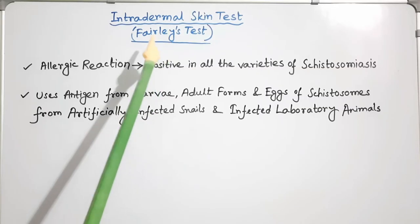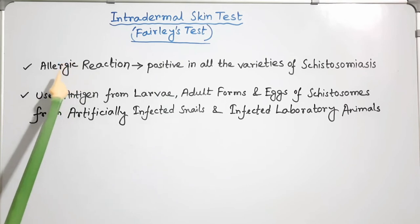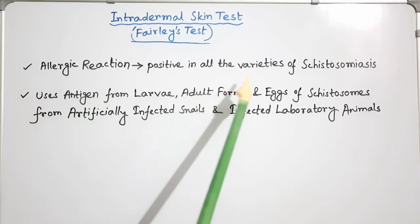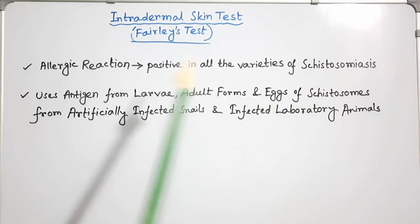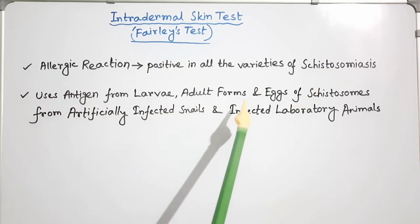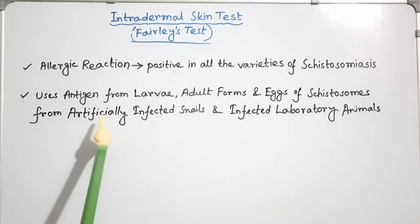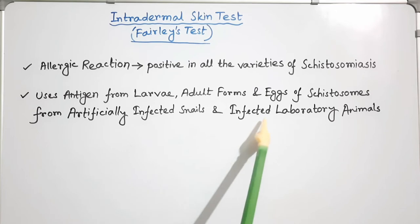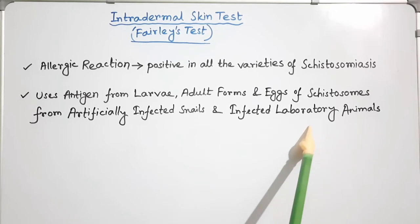Intradermal skin test: This is an allergic reaction and is positive in all the varieties of cystosomiasis. The test uses antigen from larvae, adult forms, and eggs of cystosomes from artificially infected snails and infected laboratory animals.